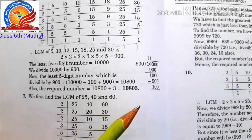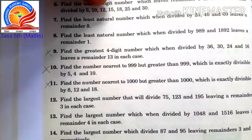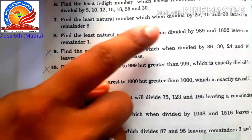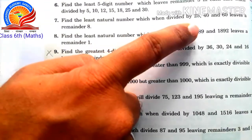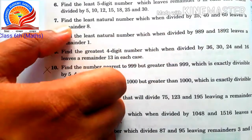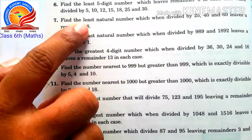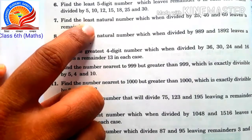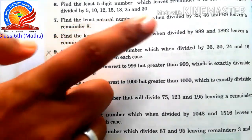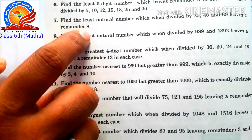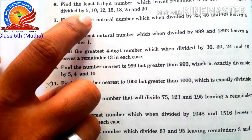Question number 7: Find the least natural number which, when divided by 25, 40, and 60, leaves a remainder of 8. For the least number, we use LCM and then add the remainder of 8.